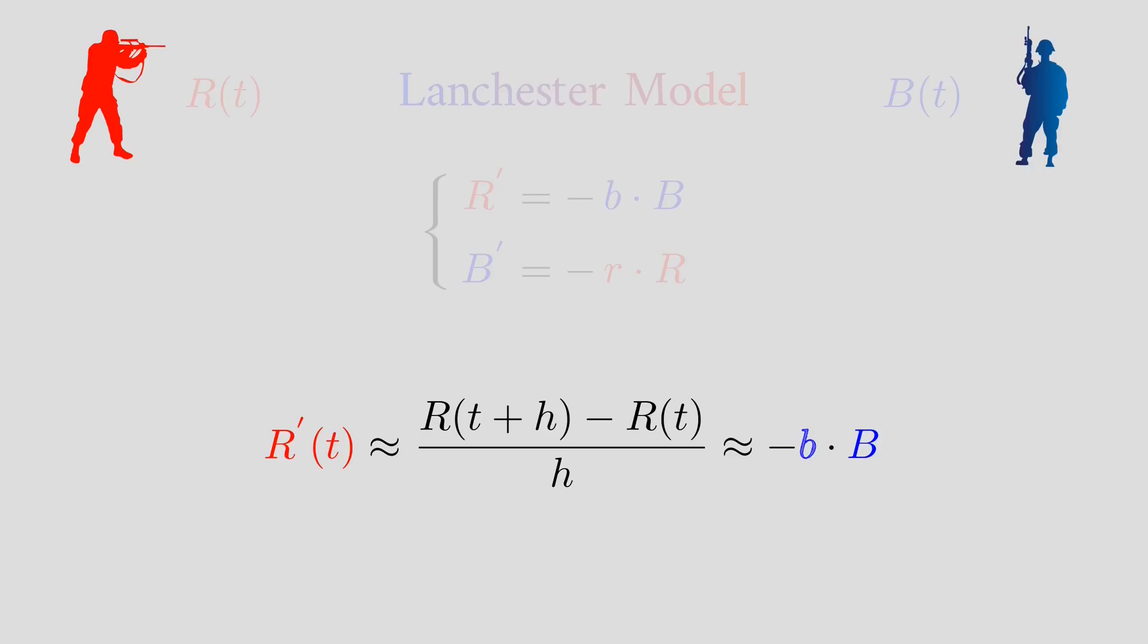And we can see that if the constant small b is larger, then the rate of decrease of the red army is going to be larger. So we can think of small b as the fighting effectiveness of the blue army. Because the larger it is, the worse is going to be for the red army.